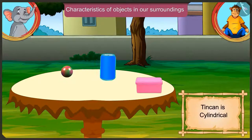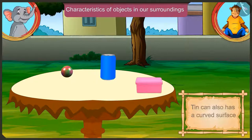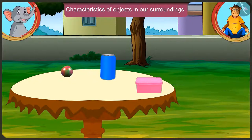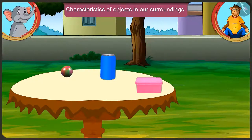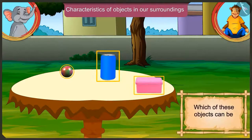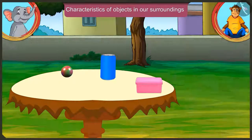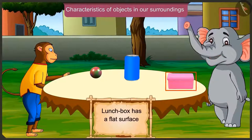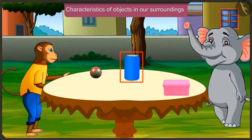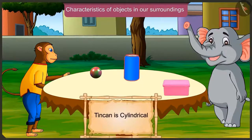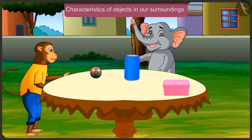It has a cylindrical shape - it is a cylinder. The surface of cylindrical objects is curved. This tin can also has a curved surface just like the water bottle. The lunchbox has a flat surface so we cannot roll it - we can only slide it. The tin can has a cylindrical shape, so we can put it upright and slide it.